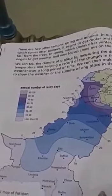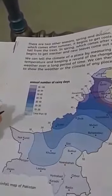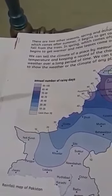Look at this map of Pakistan. You can see the annual number of rainy days in different parts of Pakistan. In different places there are different numbers of rainy days. In some parts of Pakistan there are 90 to 100 rainy days, and in some parts there are 20, 30, or 40 rainy days throughout the year.